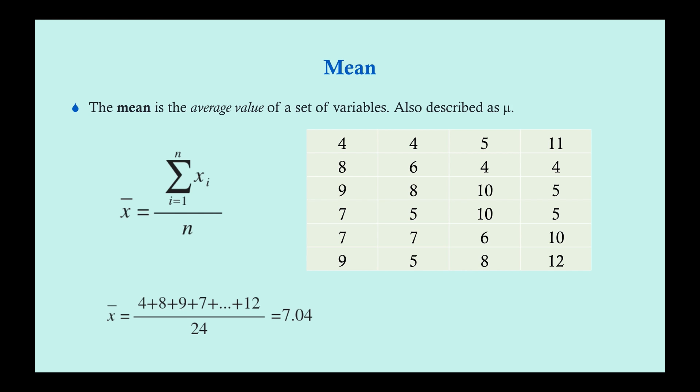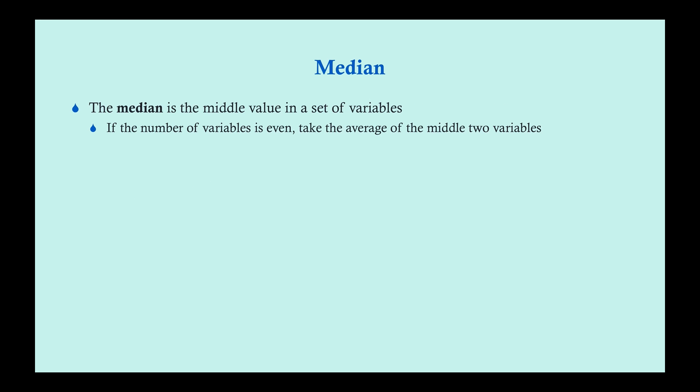The median is the middle value in a set of variables. All you do is line your variables up in numerical order and find the middle number. If you have three variables, it's the second; if you have five, it's the third. Those work for odd numbers, but what if you have an even number of variables? There really isn't a middle variable — so if you had four variables, you take those middle two and average them together.